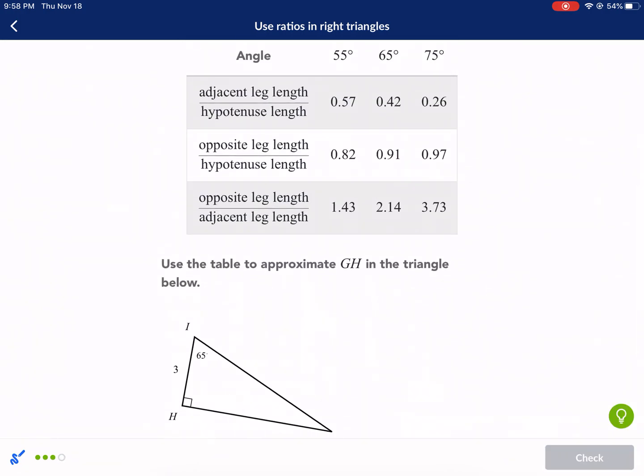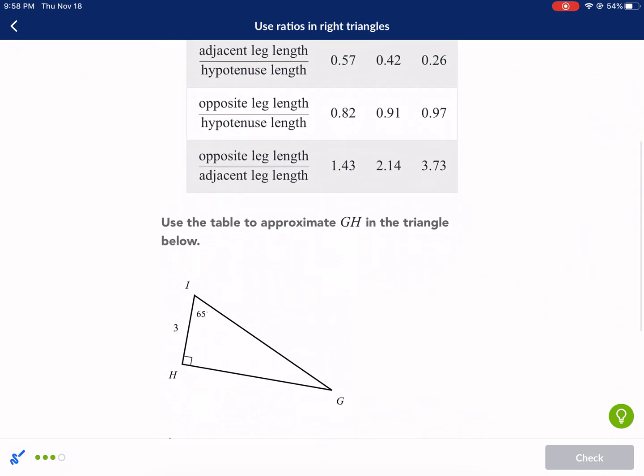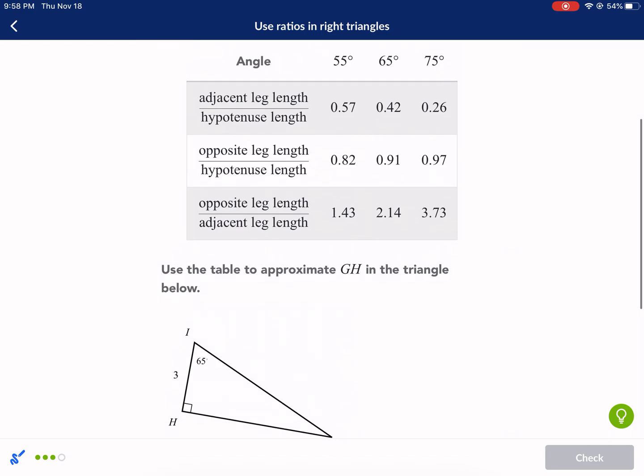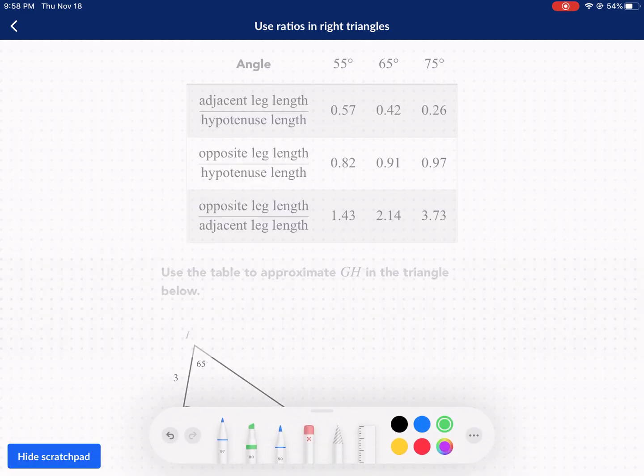Last question. Again, it's just like the first one we had. Use the table to approximate GH in the triangle. We have 65 degrees here. This one's kind of like the reverse of the first one - we got every problem type, which is great. So if you're stuck on one of these, you can fast forward or rewind to each problem that you need. So here we have 65 degrees. I know we're going to be using either sine, cosine, or tangent.